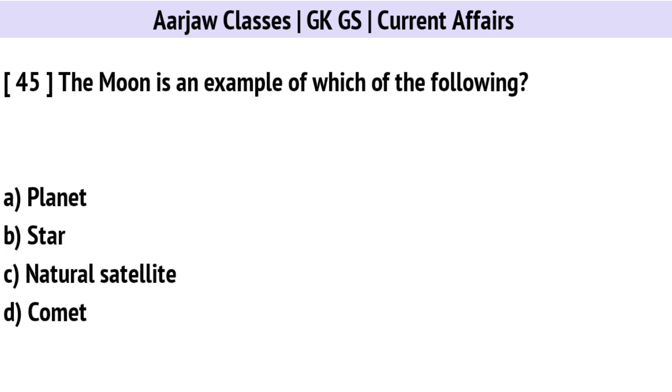The Moon is an example of which of the following? The right option is C: A natural satellite.